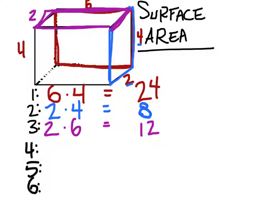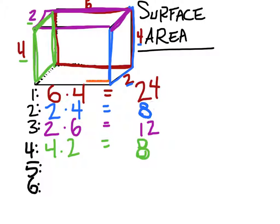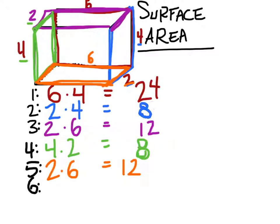Let's move on to the left surface. We can see this one is 4 by 2, so 4 times 2 is 8. Now let's look at the bottom, which is this rectangle — we can see it's 2 by 6, so 2 times 6 is 12. And our final one is this front surface: it's 4 by 6, which gives us 24 square units.